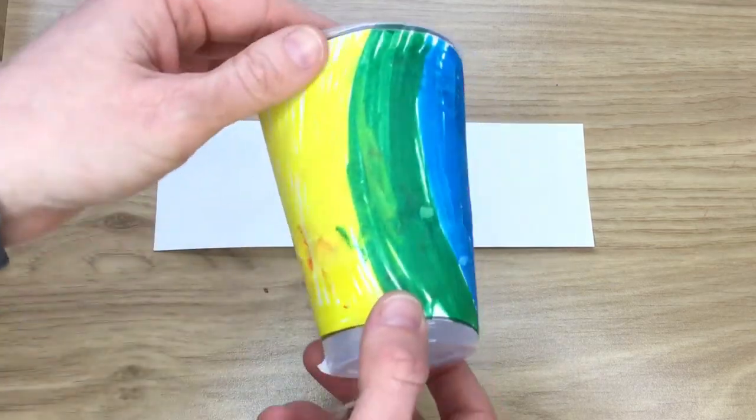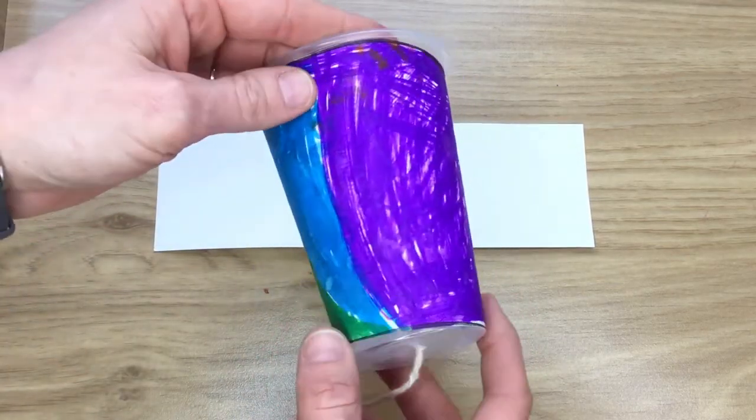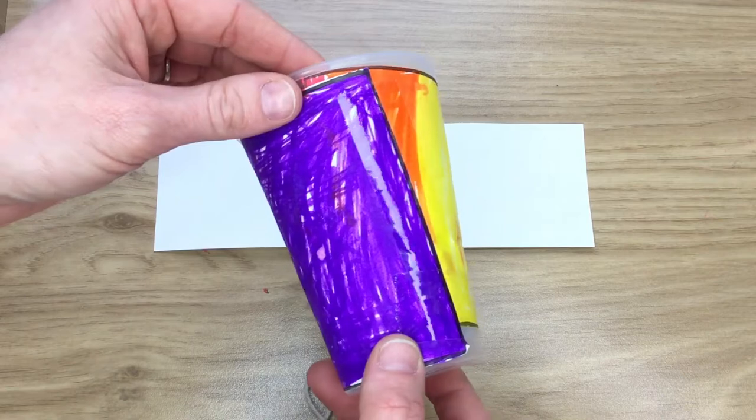So the first thing you need to do is decorate your piece of paper that's going to go around the outside of your cup. When my daughter did it, she decorated it all rainbow and then we just stuck it round the outside.